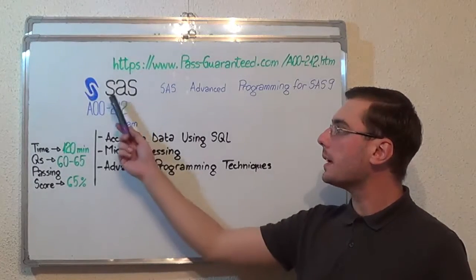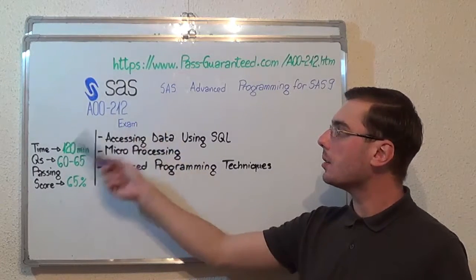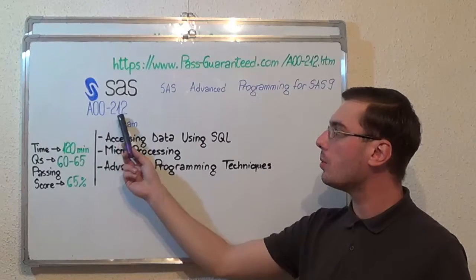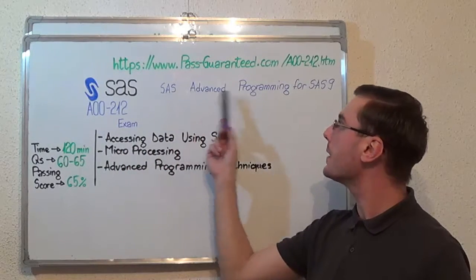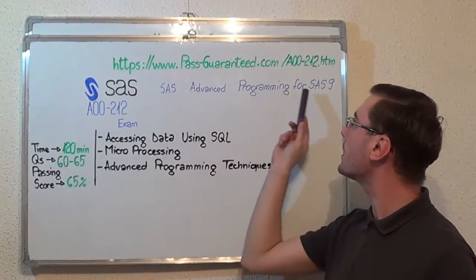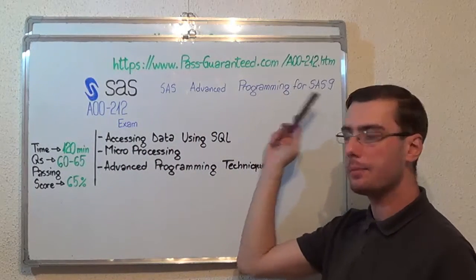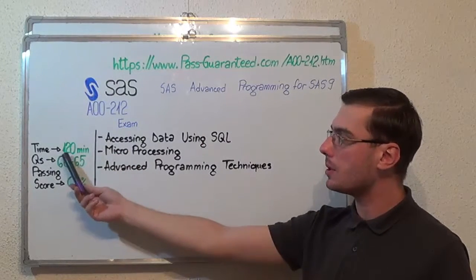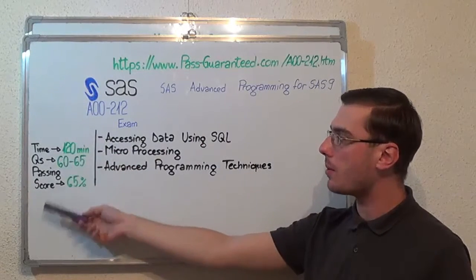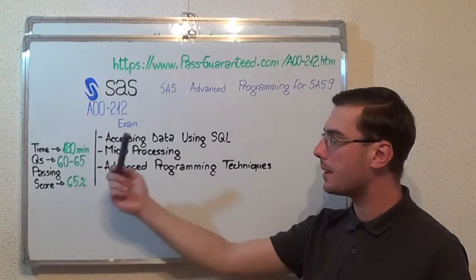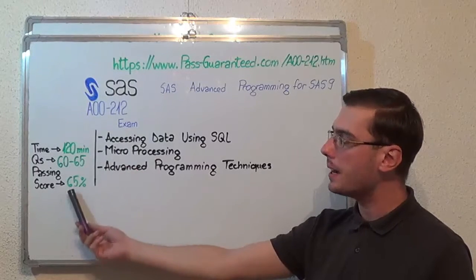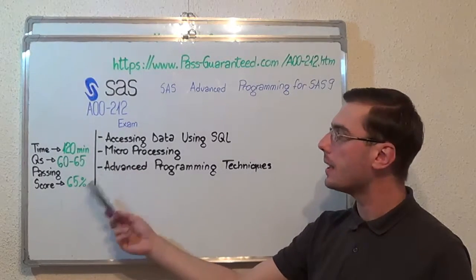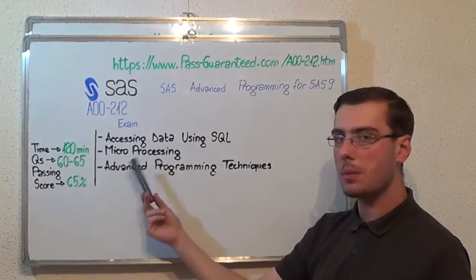Hello everyone! Today I will present you the SAS Institute 800-212 exam, SAS Advanced Programming for SAS 9. Here you have some basic test information. The duration of this exam is 2 hours, there are between 60-65 questions, and the minimum passing score is 65%.